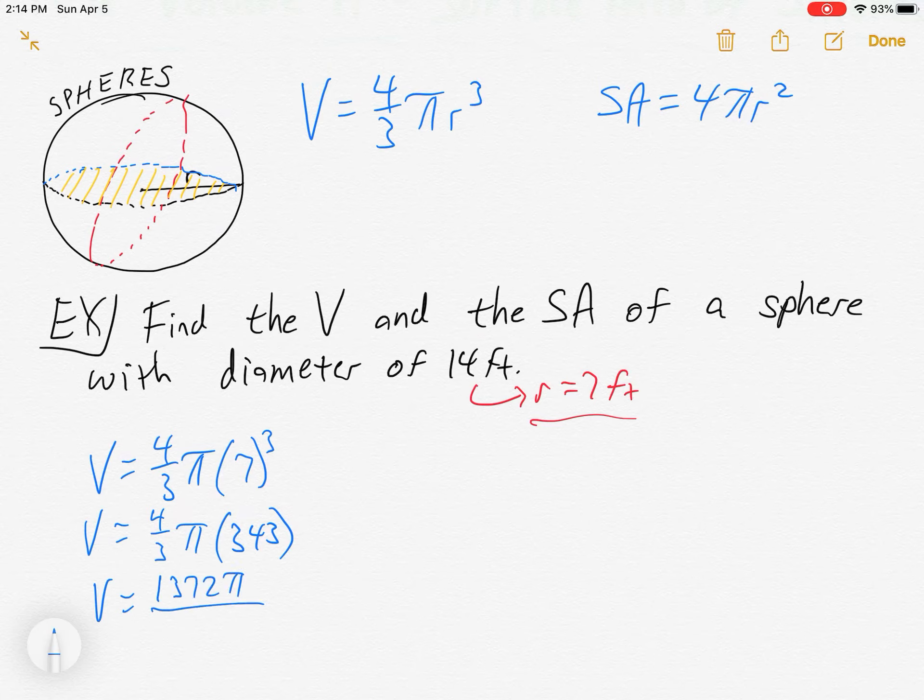And this one does not reduce at all. You get 1372 pi over 3. Let's just leave it like that. Feet cubed, right? It's volume, so it's cubic feet.